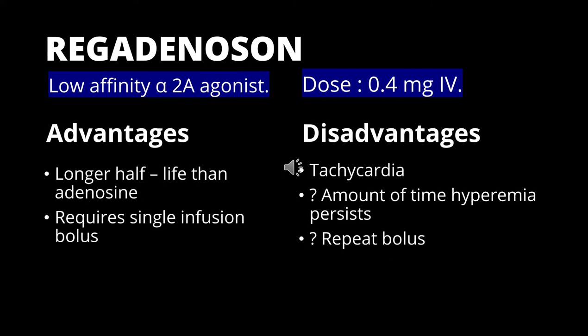Regadenoson is a low-affinity adenosine receptor agonist. It selectively binds to the A2A receptor present in the coronary arteries, causing coronary vasodilation and increasing myocardial blood flow. The hyperemia induced by regadenoson has been found to be equivalent to adenosine. The selective binding to adenosine receptors in the coronary arteries is responsible for fewer adverse events compared to adenosine. Regadenoson is administered as a single intravenous bolus of 0.4 milligrams. Drawbacks include tachycardia, and the exact duration of hyperemia after one dose is not well known. Whether the dose can be repeated in the cath lab is not well studied, but in future it may prove to be a better alternative to adenosine for calculating FFR.